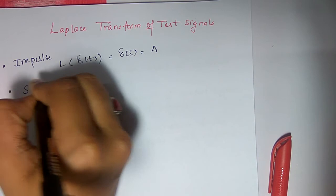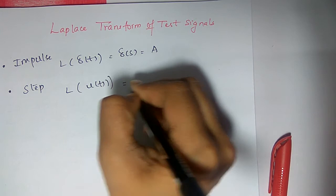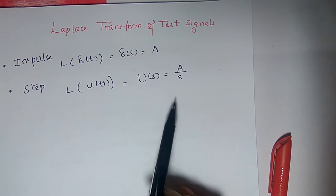And next is step. Laplace of u of t, that means step signal, is u of s is nothing but a by s. If it is unit step, it will get 1 by s.